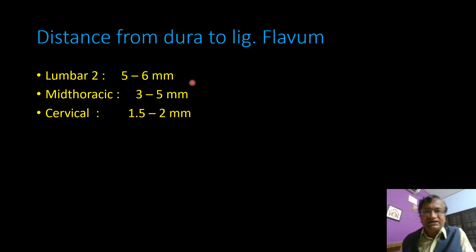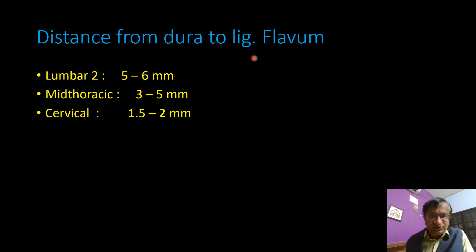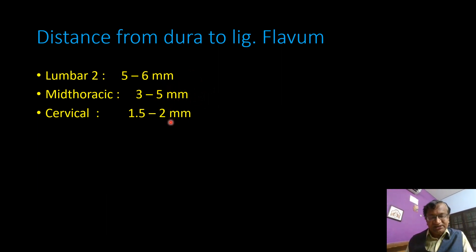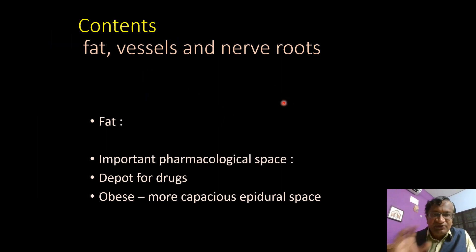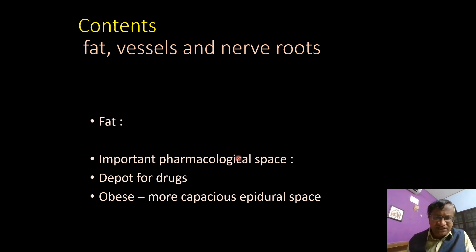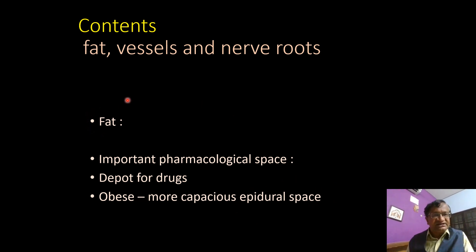The distance from the dura to the ligamentum flavum: in the lumbar region it is five to six millimeters, in the thoracic it is three millimeters, and in the cervical it is only two millimeters. The contents of the epidural space include blood vessels, nerves, and fat. Fat is an important pharmacological depot for drugs. In obese patients, the epidural space is more capacious.